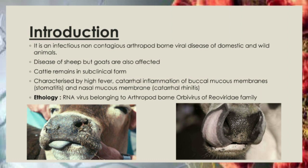It is an infectious non-contagious orbivirus disease of domestic and wild animals. This is predominantly a disease of sheep, but occasionally cattle and goats are affected. In cattle, the disease mostly remains in subclinical form. The disease is characterized by high fever, catarrhal inflammation of the buccal mucous membrane (stomatitis) and nasal mucous membrane (catarrhal rhinitis). The etiology is an RNA virus belonging to the orbivirus family, and the virus can persist for a long time in meat and blood.